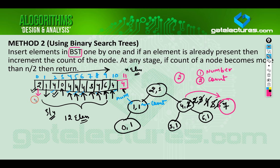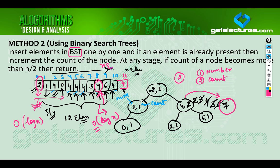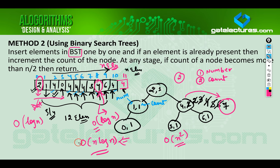Now let us find the time complexity. Sorting is not required — we just build the binary search tree. For every element, we find its position in the tree, which in the worst case takes O(log n) time. Since there are n elements and each insertion takes O(log n), the total time complexity is O(n log n). This is much better than the previous approach, which had O(n²) time complexity.